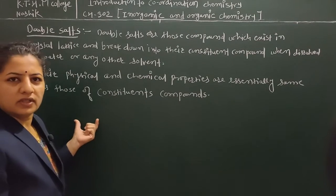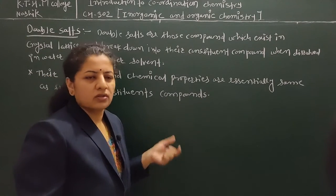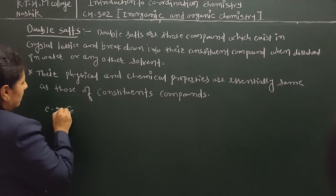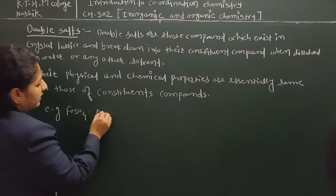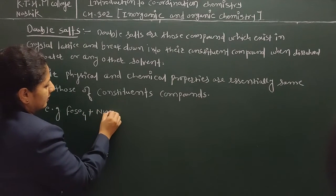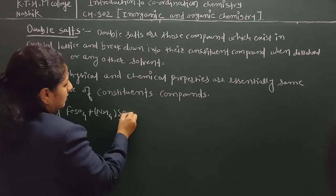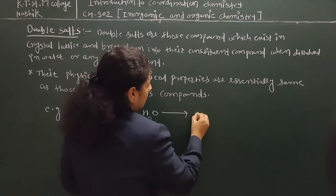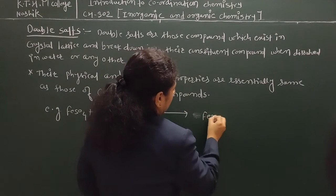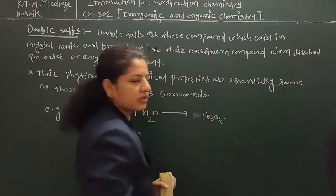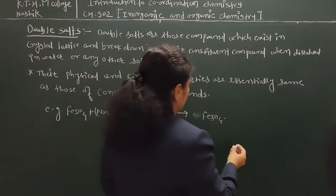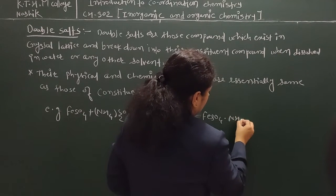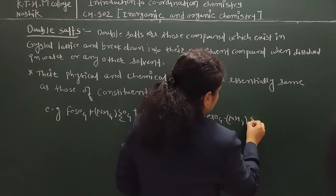An example of a double salt is Mohr's salt. We know that Mohr's salt is a combination of ferrous sulfate, ammonium sulfate, and water molecules. In Mohr's salt there are two types of salt, and that is why it is called a double salt.